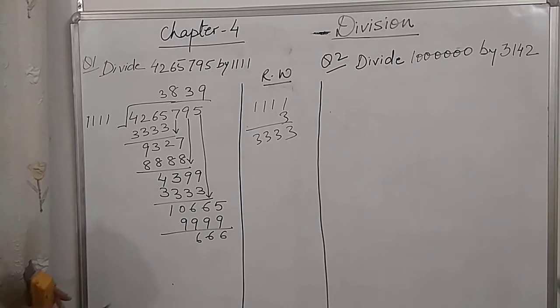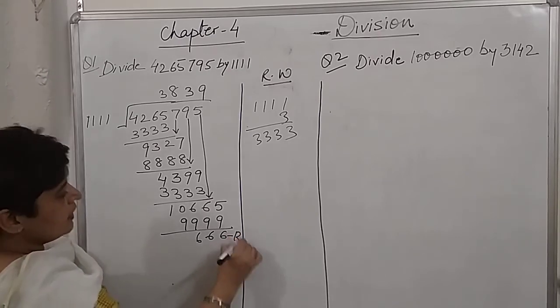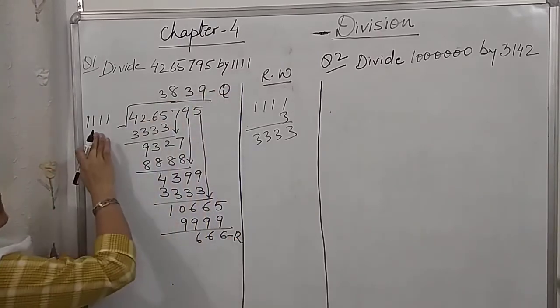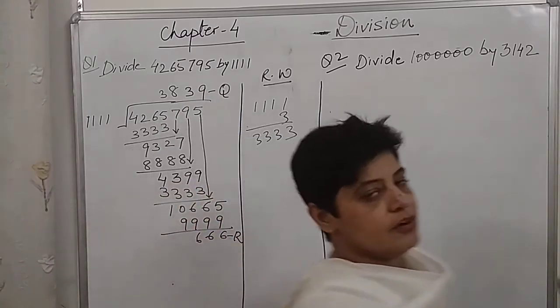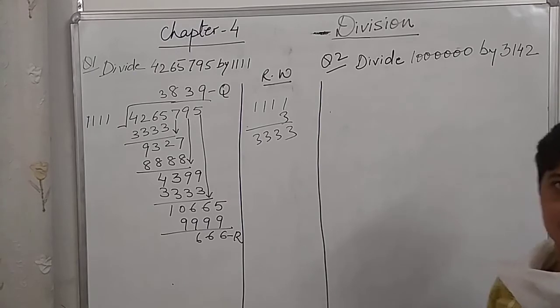So, 666 is the remainder. And this is the quotient. Divisor is this. Dividend is this. And we can even check it with the help of the equation I told you in my previous class.